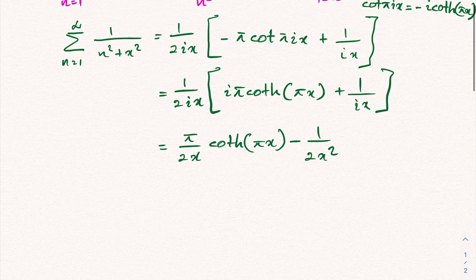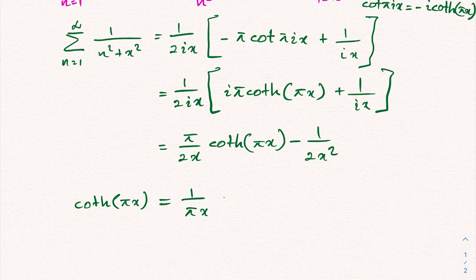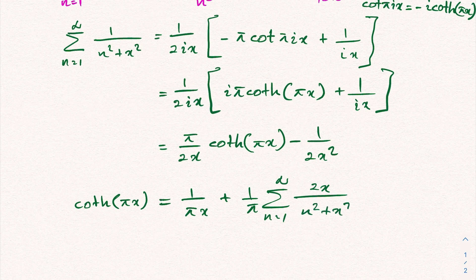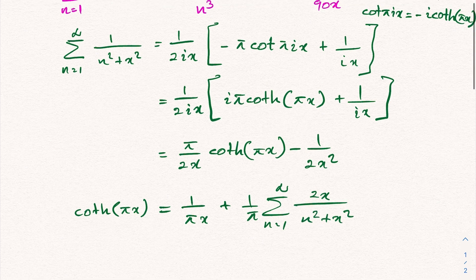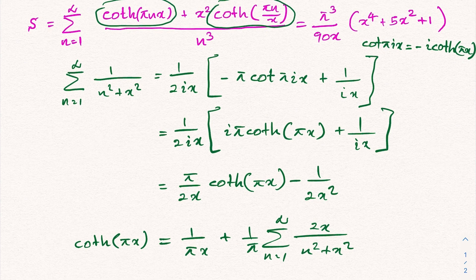Now I'm going to isolate the hyperbolic cotangent of pi x. We should multiply through by 2x over pi, so we have: hyperbolic cotangent of pi x equals 1 over pi x, plus 1 over pi times sum from n equals 1 to infinity of 2x over n squared plus x squared. This is the expression for hyperbolic cotangent of pi x.